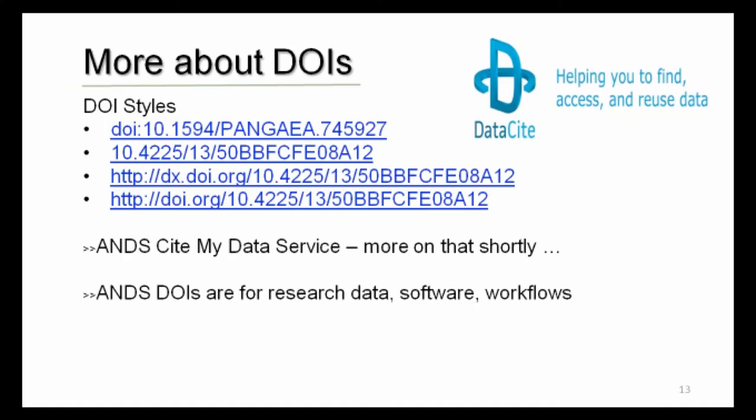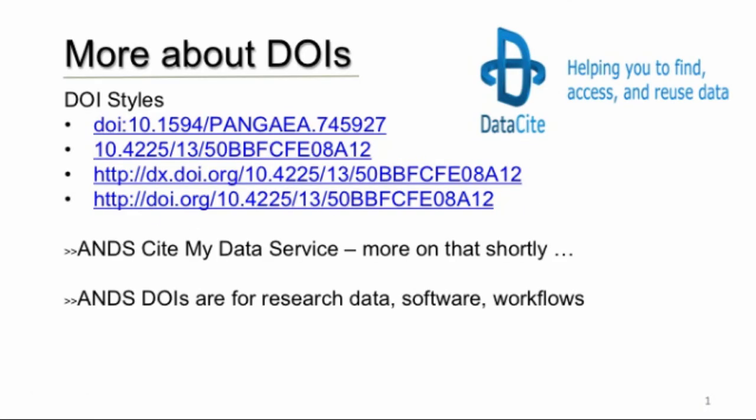You'll see DOIs presented in various formats. In some cases the name of an organisation or data repository may be embedded in the DOI, but mostly they're a pretty meaningless but unique machine-readable string — the important thing is that it is globally unique. ANDS offers the CiteMyData service, which Liz will describe — a free service for Australian publicly funded research organisations who wish to assign DOIs to research data, software, or workflows.